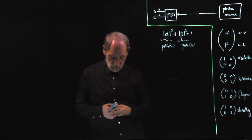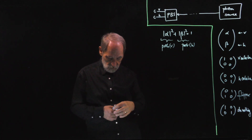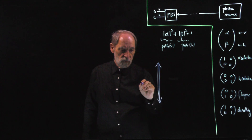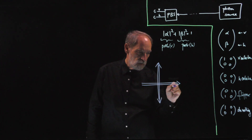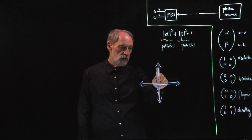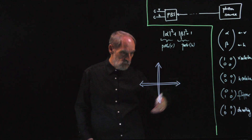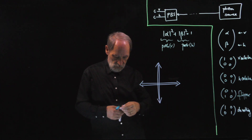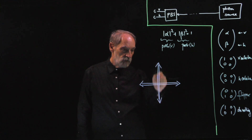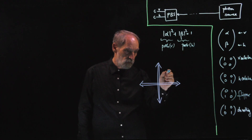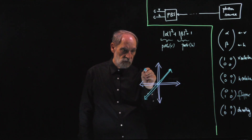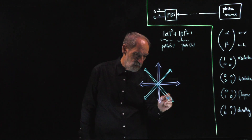The flipper is a half-wave plate set at 45 degrees, and it converts vertically polarized photons into horizontally polarized photons. Now if we set the half-wave plate at any other angle, it doesn't turn the polarization by 90 degrees — it turns it by another angle. For example, if we set the half-wave plate at 22 and a half degrees — half of 45 degrees — then vertically polarized photons are converted into linearly polarized photons in the diagonal direction, and horizontally polarized photons are converted into photons in the anti-diagonal direction.